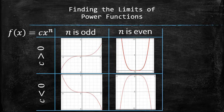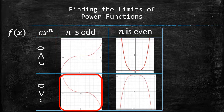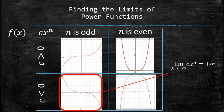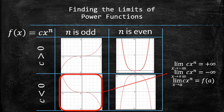The behavior of a power function with a negative coefficient and odd degree can be described with the following limits: f approaches positive infinity as x approaches positive infinity, and for any point in between, f approaches its output at that point because power functions are continuous.